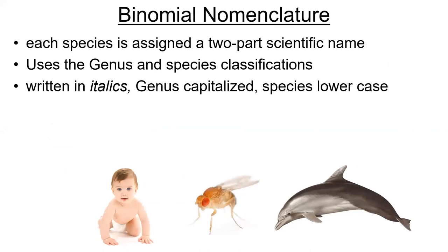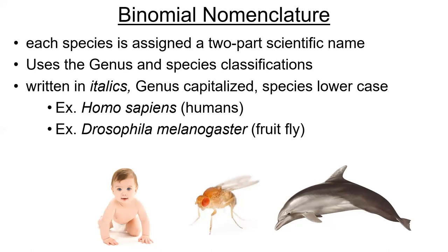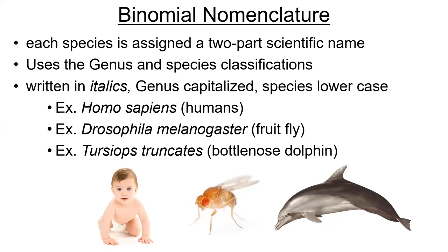We name them in a two-naming system we call binomial nomenclature. What you've probably heard of for humans is Homo sapiens. That 'Homo' represents our genus and 'sapiens' represents our species. So we give scientific names to species using their genus and their species names from those two taxa groups. If you wanted to name a fruit fly, it would be in the genus Drosophila, and its species is melanogaster, so the fruit fly is Drosophila melanogaster. The dolphin is Tursiops truncatus.